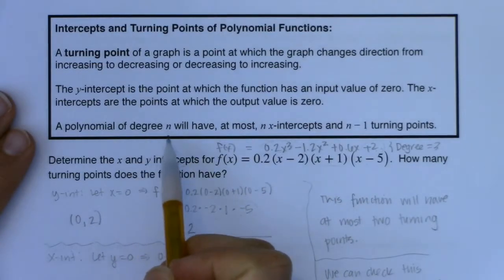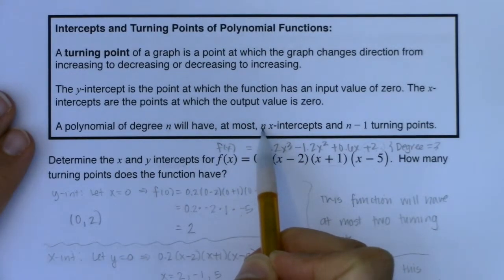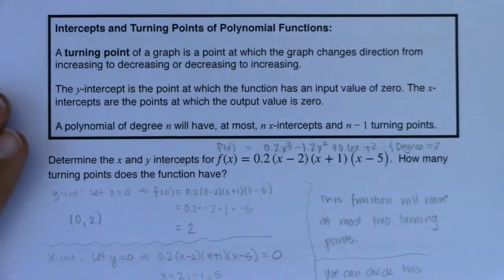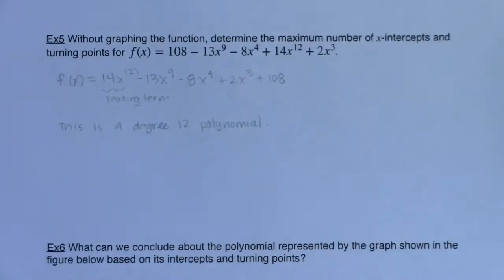Well, we saw in example 5, we have a degree 12 polynomial. So for example 5, our n is 12. So I will have at most 12 x-intercepts and 11 turning points. And that's the answer to that question.